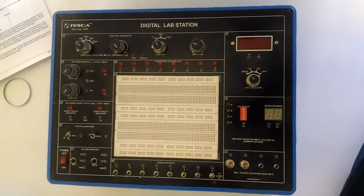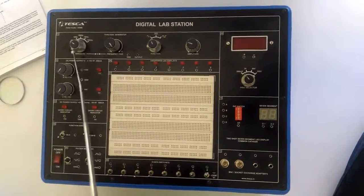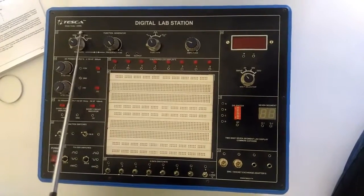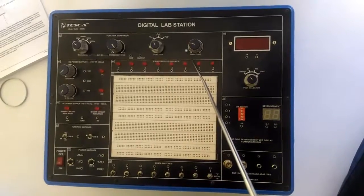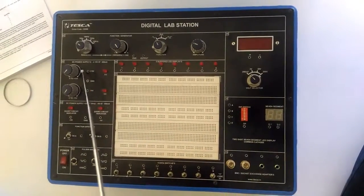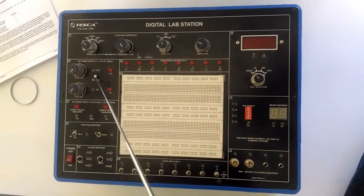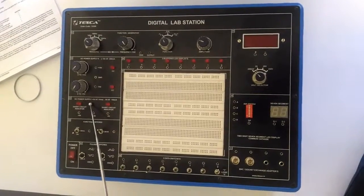Firstly, I am describing the panel. This block is for the function generator block. We can vary the frequency from 1 Hz to 10 kHz. This is for generation of different waveforms and this is for variation of amplitude. This is the variable DC power supply from plus 15 volts to minus 15 volts. This is the DC power supply at 5 volts.